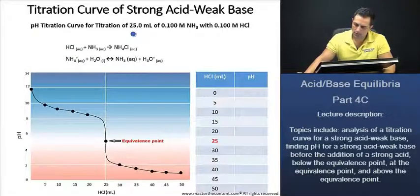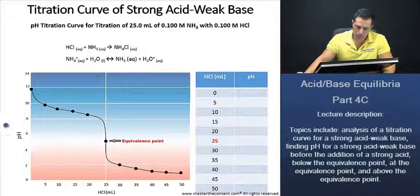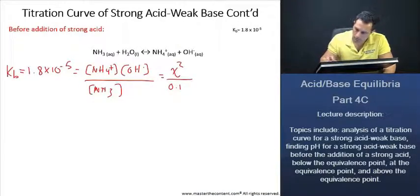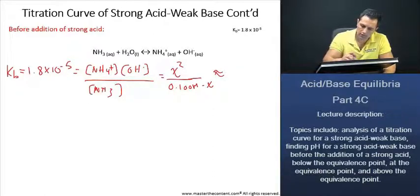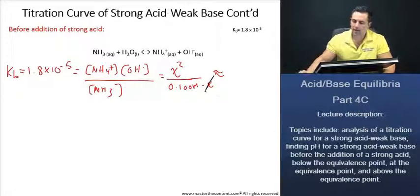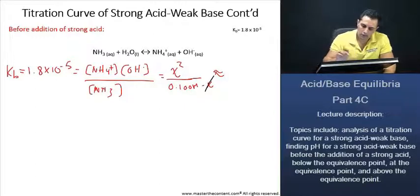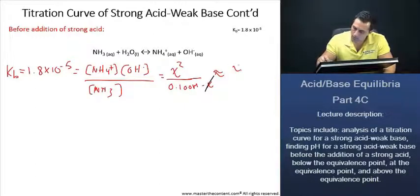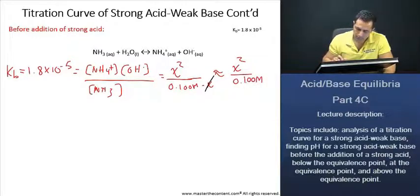If we just go back, they told us that it's going to be a 0.1 molar ammonia solution. Once we go ahead and we fill that in, minus x. Here, we'll just make the assumption that x is actually going to be less than 5% of our initial concentration. And once we go ahead with that assumption, we get the following.